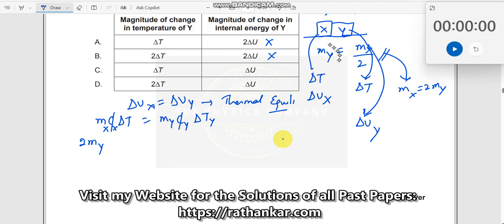cX and cY are the same, we have already seen this. So 2mYcYΔT equals mYcYΔTY. mY and cY cancel. So ΔTY is equal to 2 times ΔT. This is the right answer. D is the right answer.